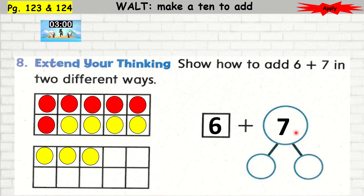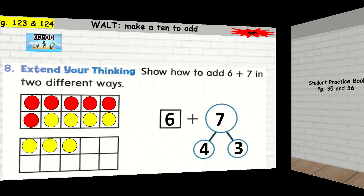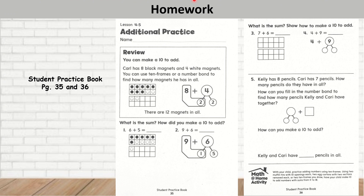You can also use this method. Here I have 6 plus 7. To get to a 10, I need to add 4 more to the 6. So here I have 4 — 6 plus 4 is 10. If I held up 7 fingers and I took away 4 of it, I would need 3 more. So 4 plus 3 is 7. So here I have 6 plus 4 is 10, plus 3 is 13. This is your homework for tonight: Lesson 4-5, page 35 and 36 in your student practice book.